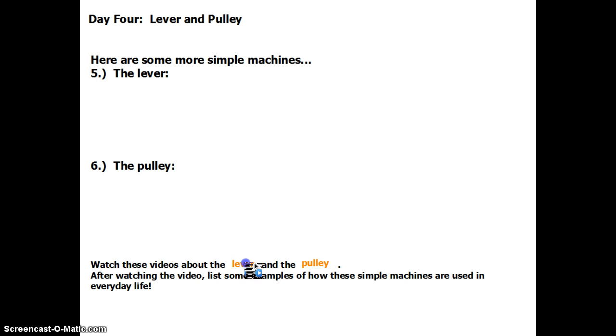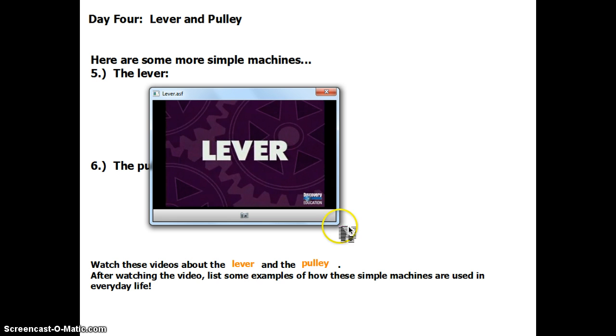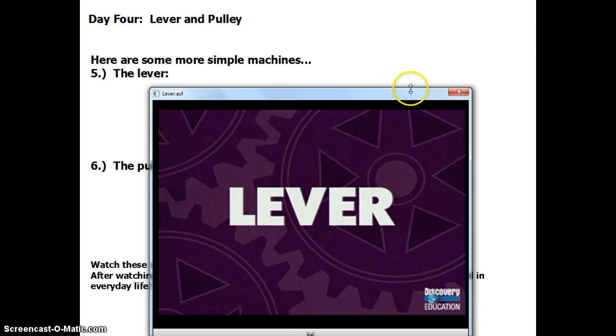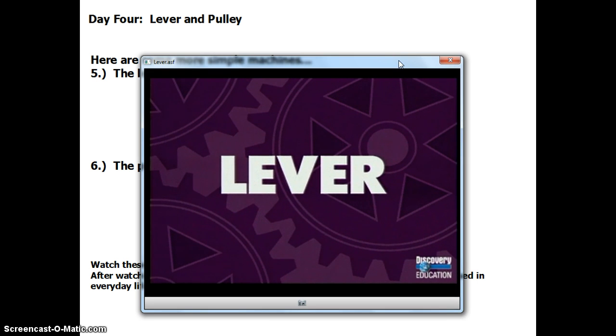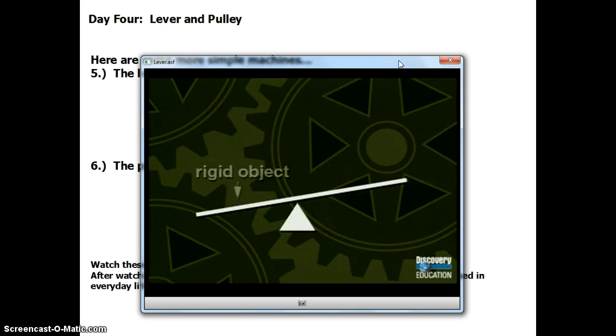Okay, so here is the lever. The next simple machine we're going to discuss is called a lever. A lever is simply a rigid object or bar that pivots around a fixed point called a fulcrum. A lever reduces the amount of effort needed to lift or move an object.